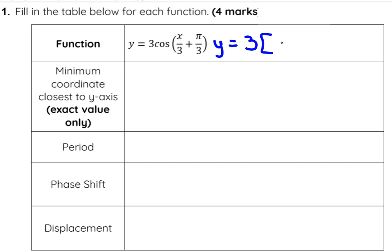Anytime there's a b value, you always want to factor that out. So I'm going to do x over 3 divided by 1 over 3 is x, plus pi over 3 divided by 1 over 3 is just pi.